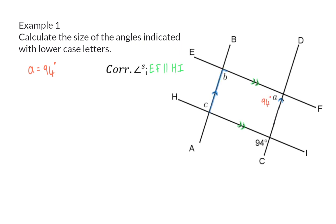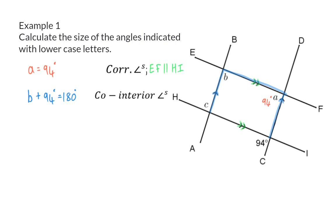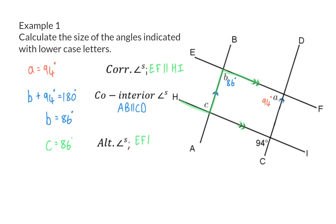Now that we have angle A, we can move on to angle B. Angle A and angle B form a U, which means we can use co-interior angles. So B plus A (which is 94 degrees) should add up to 180 degrees because they are co-interior angles, with the parallel lines AB parallel to CD. Therefore, angle B is equal to 86 degrees. Lastly, C and B form alternate angles, which means angle C is also 86 degrees, reason: alternate angles, with the parallel lines EF parallel to HI.